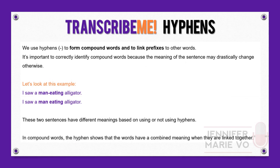The first one we're going to talk about are hyphens. We use hyphens to form compound words and to link prefixes to other words. It's important to correctly identify compound words because the meaning of the sentence may drastically change otherwise. Let's look at an example.